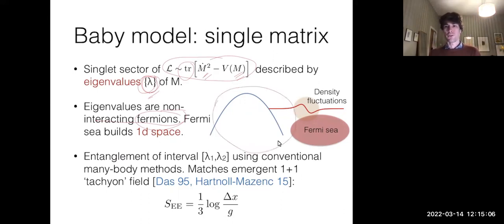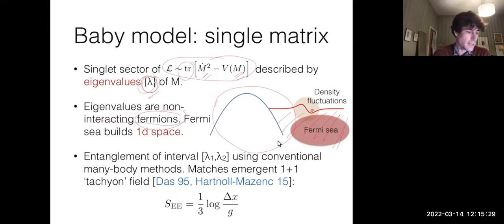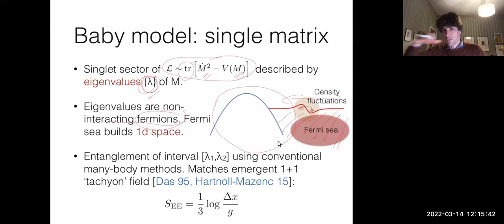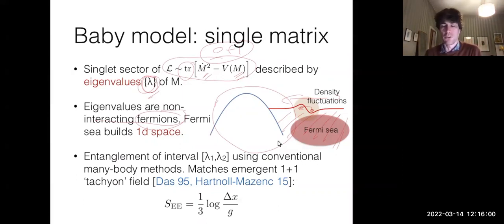The theory amounts to N non-interacting fermions in the potential. They fill up a Fermi sea, and the lowest energy excitation is to take a fermion just below the Fermi surface and put it just above. The density fluctuations can be shown to obey a wave equation moving around the Fermi sea — that's your emergent one-dimensional space. You started with zero+1 dimensions, there was no space, but the Fermi sea builds the space and the emergent local dynamics is just this wave equation.